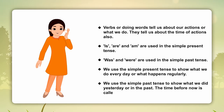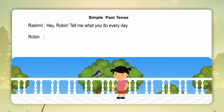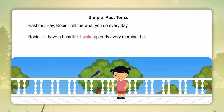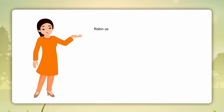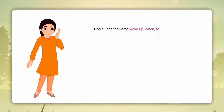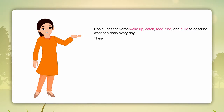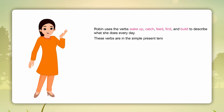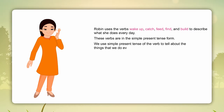The time before now is called the past. Simple present tense. Rashmi: Hey Robin, tell me what you do every day. Robin: I have a busy life. I wake up early every morning. I catch worms in your garden. I feed my chicks. I find straw in that old house and build my nest. Robin uses the verbs wake up, catch, feed, find and build to describe what she does every day. These verbs are in the simple present tense form. We use the simple present tense of the verb to talk about things that we do every day.